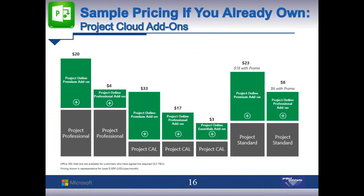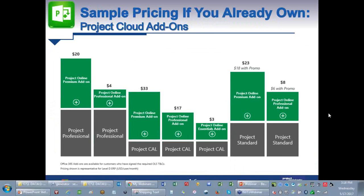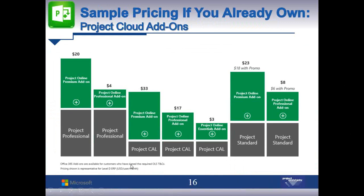The Project Online Essentials add-on from the CAL is a small upcharge to get into the Microsoft Cloud. Project Standard is the project scheduling engine without the capability to connect to the cloud or on-premise Project Server, and there's currently a promotional pricing offer to encourage movement toward the cloud.